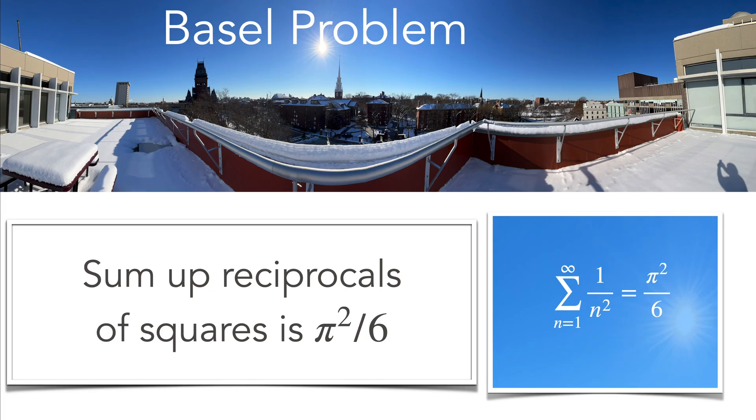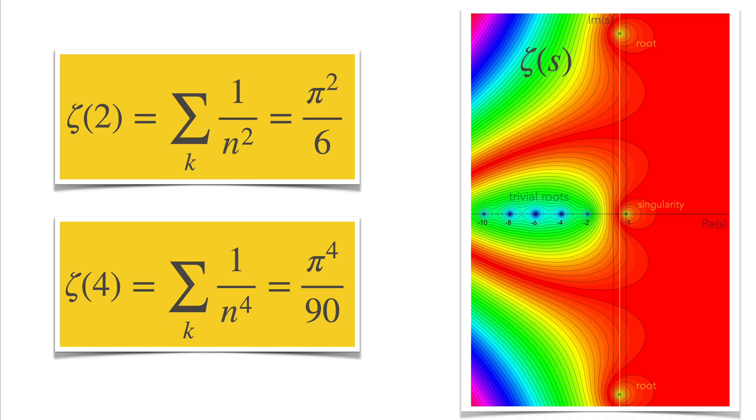The Basel problem, a famous problem which Euler solved first. Sum of the reciprocals of the squares is pi squared over 6. That's a value of the zeta function at s equal to 2.